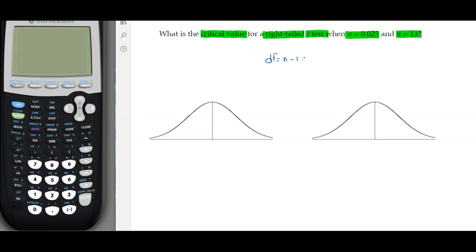n minus 1, which is 12 (13 minus 1). Graphing it helps tremendously to understand the problem. We have a right-tailed distribution, so the alpha location is on the right side. This is my alpha, and because we only have one tail, it's the totality of